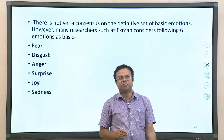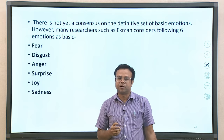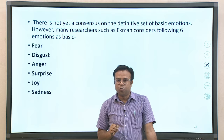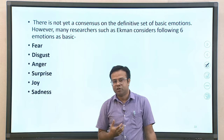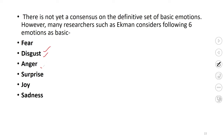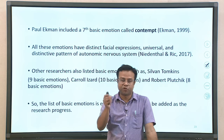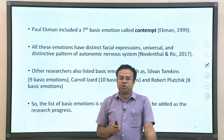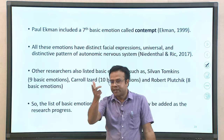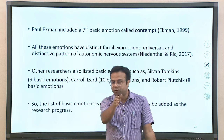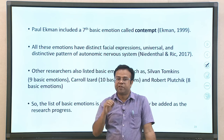There is not yet consensus on which emotions should be called basic emotions, and the number keeps changing with different theories. However, one of the most evidence-based theories is Paul Ekman's, who initially proposed six basic emotions: fear, disgust, anger, surprise, joy, and sadness. He later included a seventh emotion — contempt — making a total of seven basic emotions. All these emotions have distinct facial expressions, are universal, and have a distinctive pattern of physiological or autonomic nervous system response.